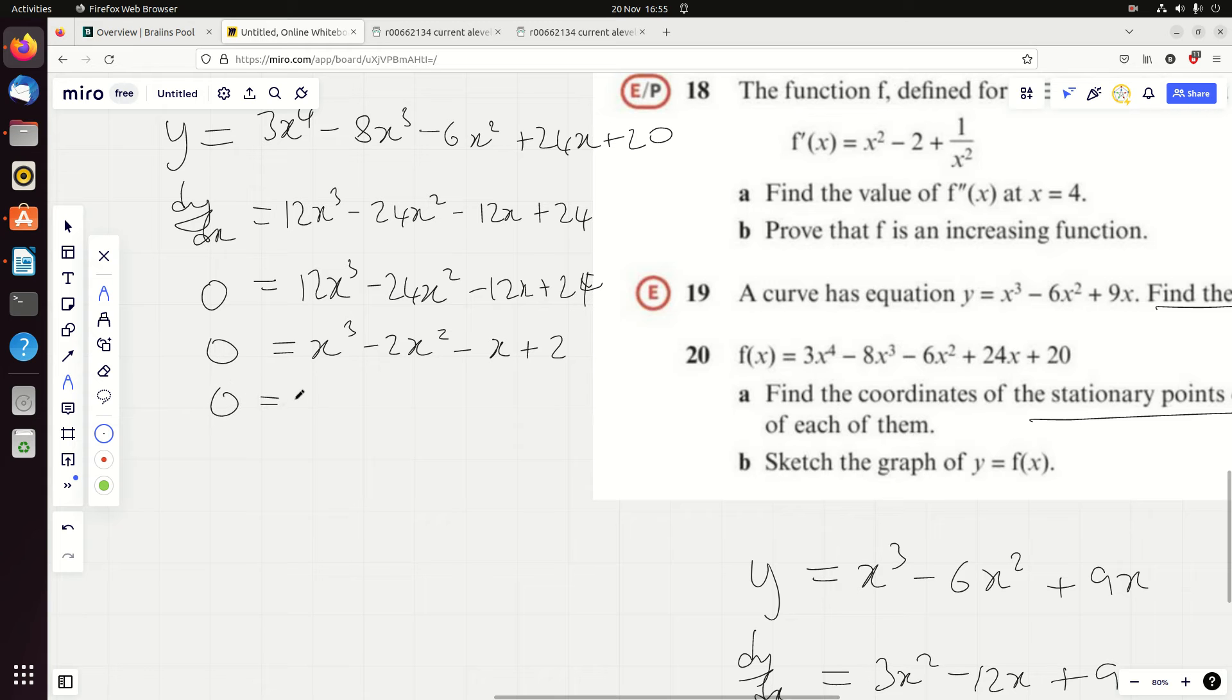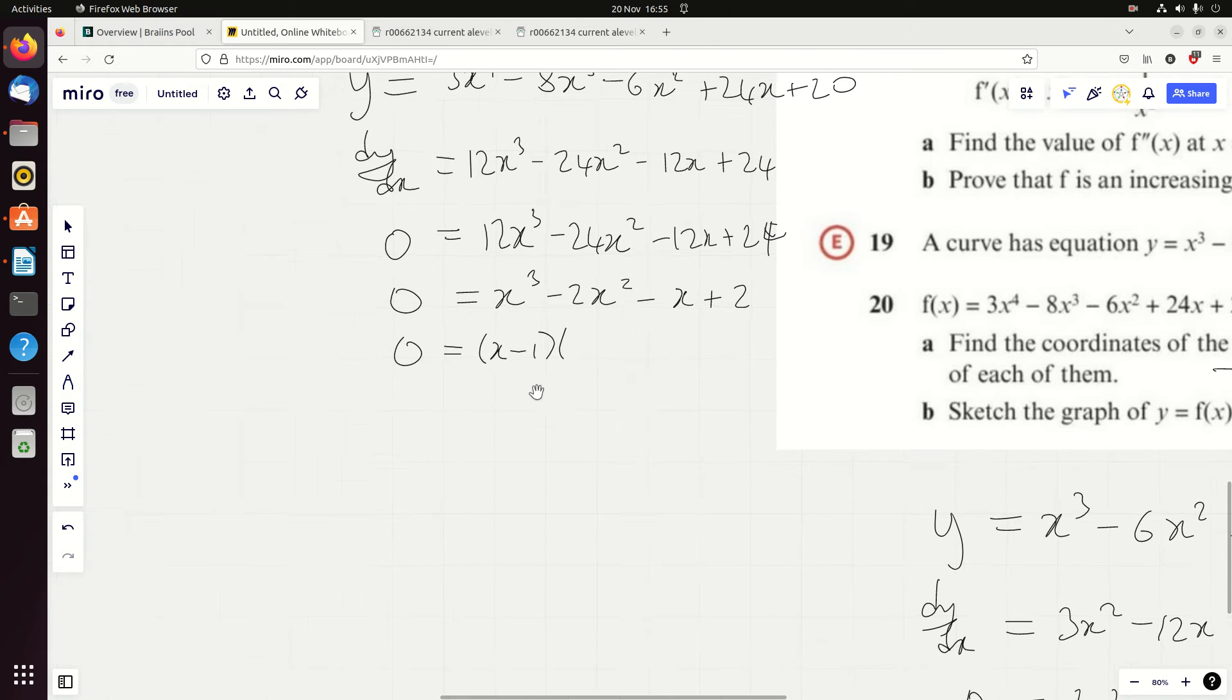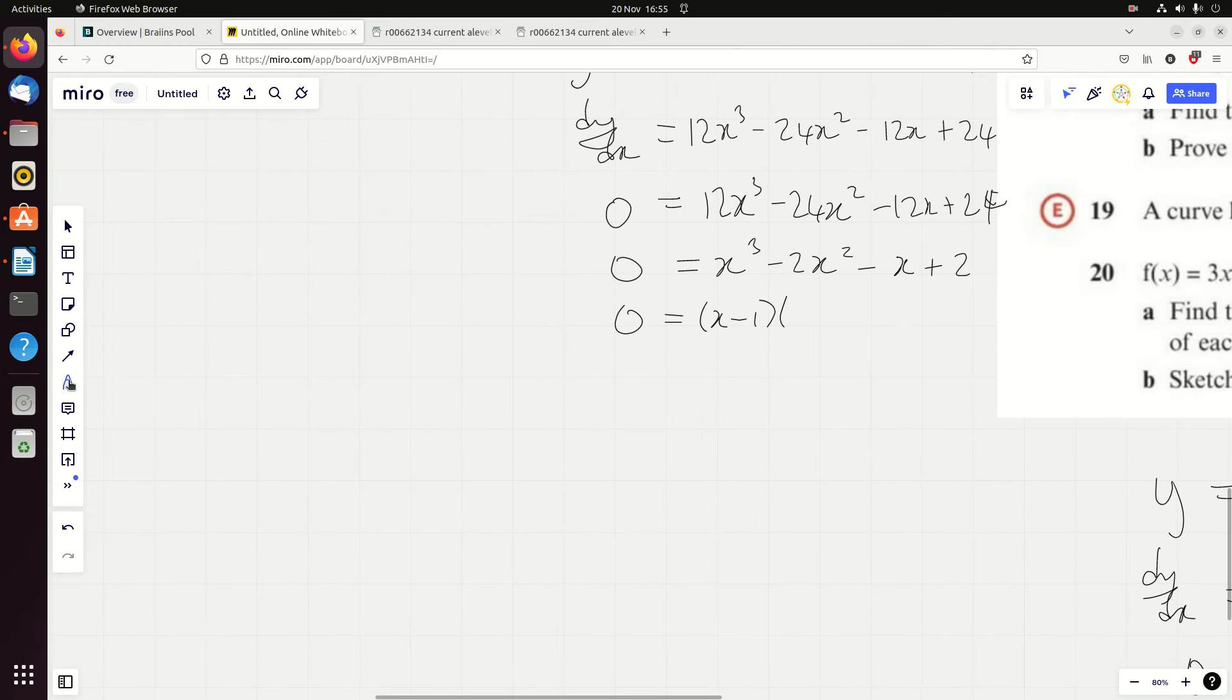So x minus 1 is a factor. Now I don't think I taught you this bit - I can't remember - but my way of doing the division, I'm not very good at long division. Who understands long division? Let's be honest, no one. So I just basically think, well, what do I have to times x minus 1 by to make all of that?